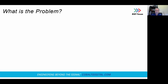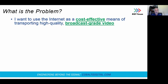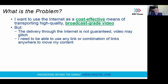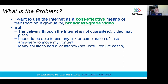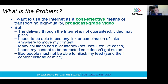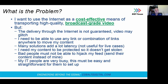So what's the problem we are trying to solve? I want to use the internet as a cost-effective means of transporting high quality broadcast grade video. The delivery of packets on the internet is not guaranteed, and every time you drop a packet there's a video glitch. I need to be able to combine links either for performance or reliability. There are solutions out there that do some of that but have high latency, which is no good for live cases. My content needs to be protected so it doesn't get stolen, and bad people shouldn't be able to hijack my link and push their content instead of mine. We're talking about the internet, so IT people are very busy and whatever I do needs to be easy for them.